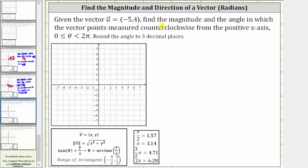Given vector u in component form, we're asked to find the magnitude, which is the length of the vector, as well as the direction, where the direction is the angle in which the vector points measured counterclockwise from the positive x-axis. Notice how we're told to give the angle theta in the interval from zero to two pi radians.